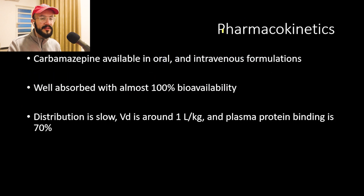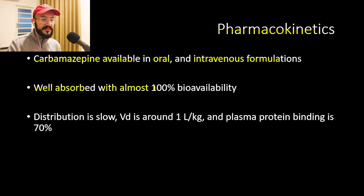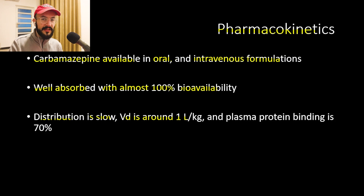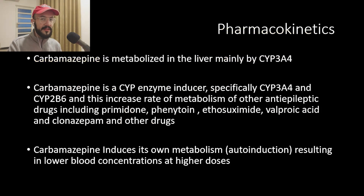Now let's move on to talk about the pharmacokinetics of this medication. Carbamazepine is available in oral and intravenous formulations. The oral formula is well absorbed with almost 100% bioavailability. Distribution is slow, with a volume of distribution of around 1 liter per kilogram — so if we have toxicity, we can clear the medication through dialysis because the volume of distribution is less than 10. Plasma protein binding is 70%. Regarding metabolism, carbamazepine is metabolized by the cytochrome P450 enzymes in the liver, mainly by CYP3A4.